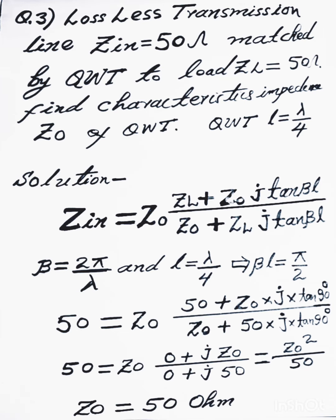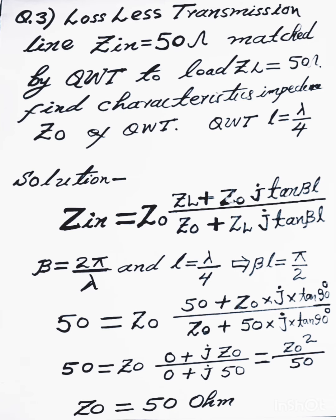And beta equal to 2 pi upon lambda wavelength, and L equal to wavelength upon 4, so BL equal to pi upon 2, equal to 90 degrees. So 50 equal to Z0 multiply by...